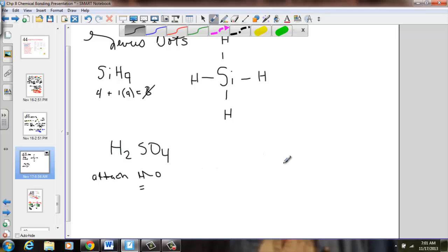The least electronegative element we'll place in the center, that is sulfur. Let's count our electron dots. Hydrogen will contribute one apiece for a total of two. Sulfur lives in group 6A, so it will contribute 6. Oxygen lives in 6A, but there's four of them, so that will contribute 24. 24 and 8, we have a total of 32 dots by the time we're done.